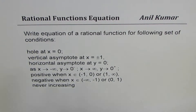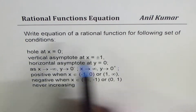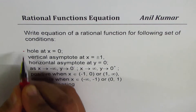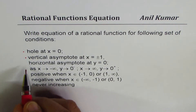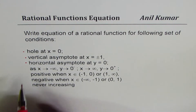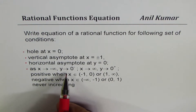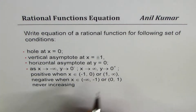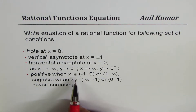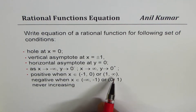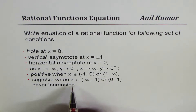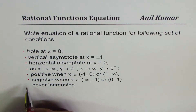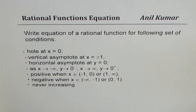We need to write the equation of a rational function for the following set of conditions: hole at x equals 0; vertical asymptote at x equals ±1; horizontal asymptote at y equals 0, where as x approaches negative infinity y approaches 0 from below, and as x approaches positive infinity y approaches 0 from above. The function is positive when x belongs to (−1, 0) or (1, ∞), and negative when x belongs to (−∞, −1) or (0, 1). The function never increases.